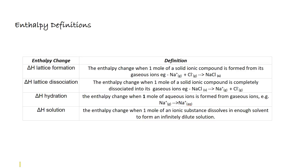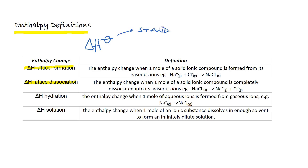So before we go any further we're just going to look at some enthalpy definitions, of which we saw some of these in the previous lecture when we were looking at Born-Haber Cycles. Remember that each of these should have a little theta sign, indicating standard conditions, which we discussed as 298 Kelvin and 100 kilopascals.